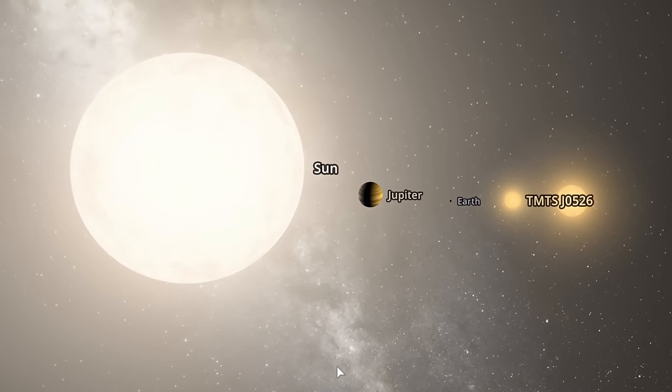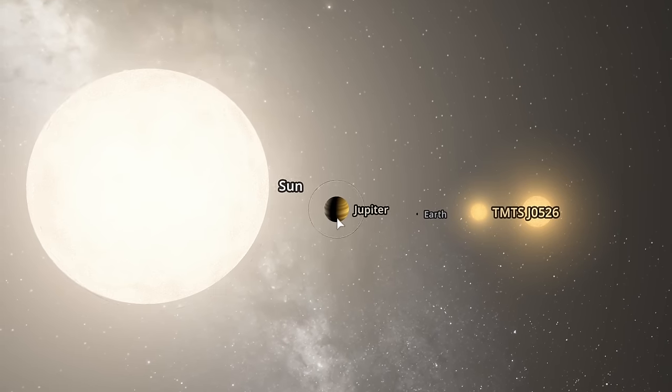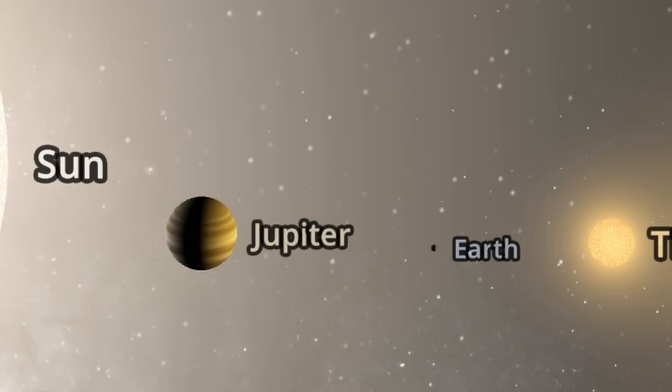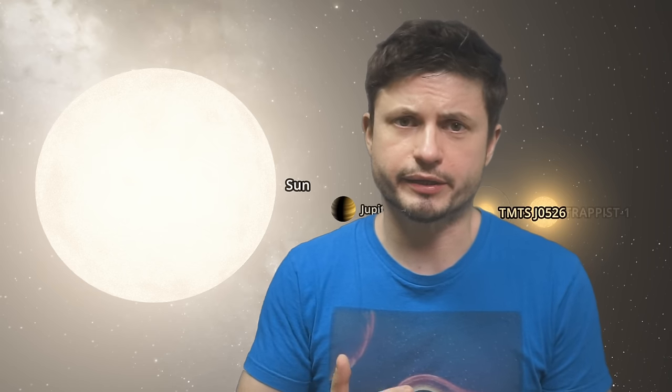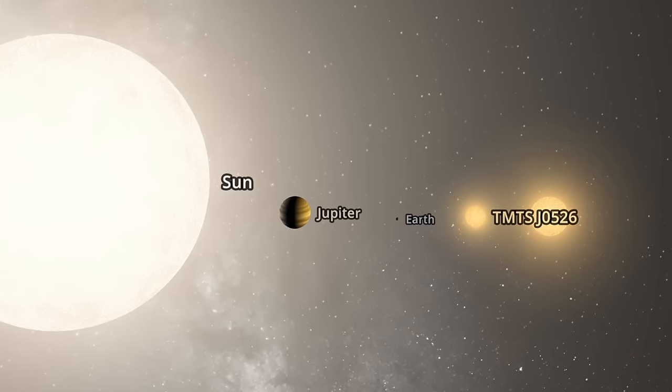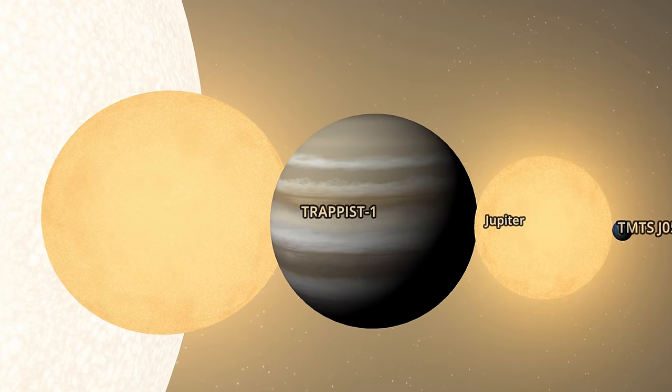For this I had to bring out my old friend Universe Sandbox. So here's the Sun, here's Jupiter, and here is Earth. As you can see, the size difference here is pretty dramatic. But it's these two last objects that we're kind of concerned with. So here is roughly what all of this would look like side by side.